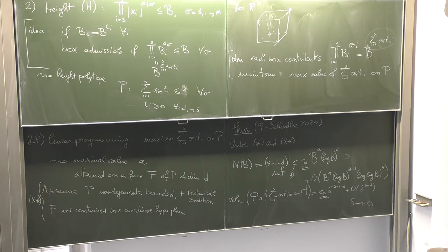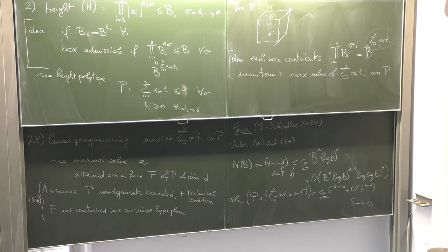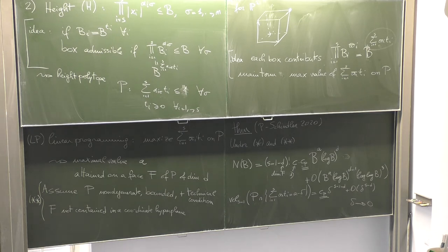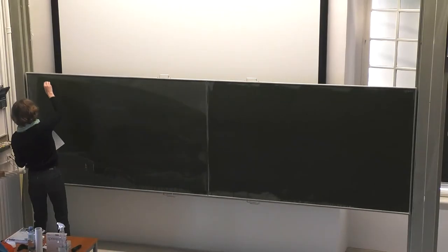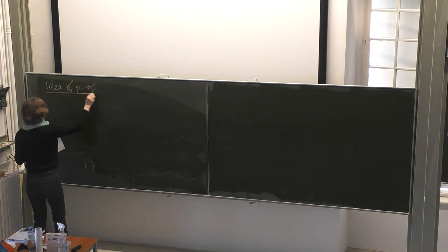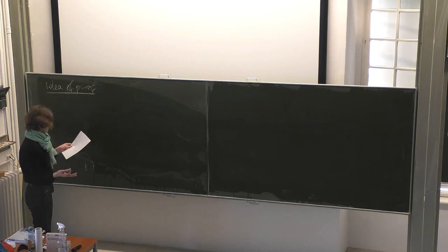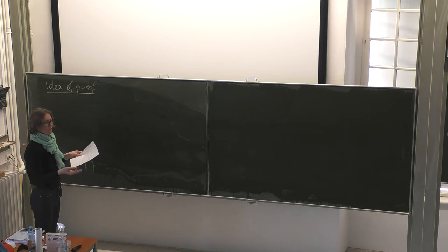I want to explain very briefly the idea behind the proof of this theorem and then show the application. In the proof, we distinguish cases depending on whether our lattice point coordinates xi have big or small values.